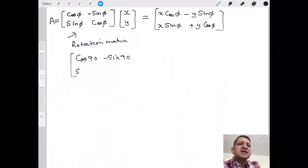Cos 90, -sin 90, sin 90, and cos 90. When I put the values, I'm going to get 0, -1, 1, and 0. So this is supposed to rotate the coordinate by 90 degrees.